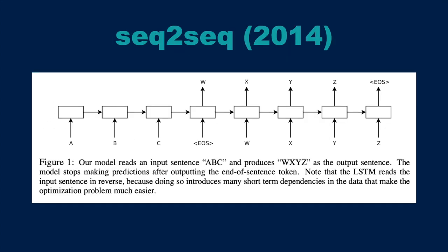The seq-to-seq paper from 2014 illustrates the RNN idea well. With input ABC trying to produce output XYZ, they remap the output back as input. In practice, you take a sentence like 'I am a student,' map it to the Spanish output 'yo soy estudiante,' and by combining these pairs the model can then correctly predict the Spanish version of a new sentence like 'I am a teacher.' This is a really important paper and a great jumping-off point for understanding RNNs in general.